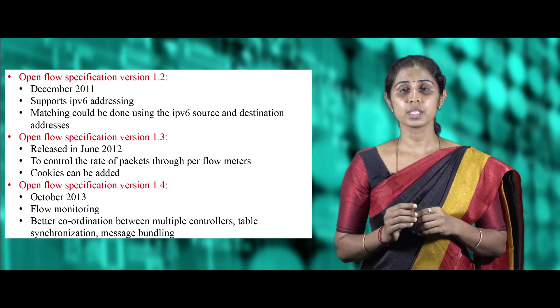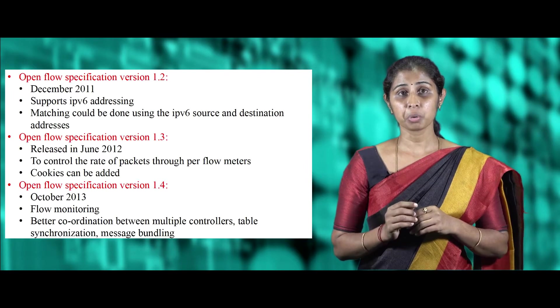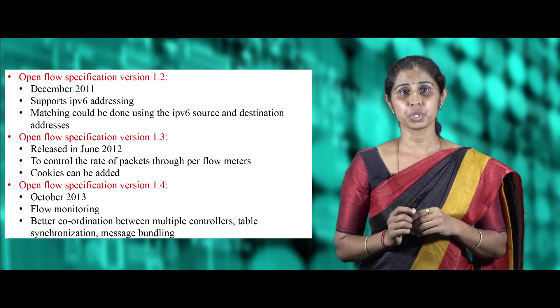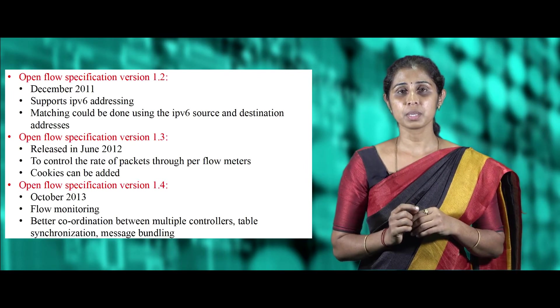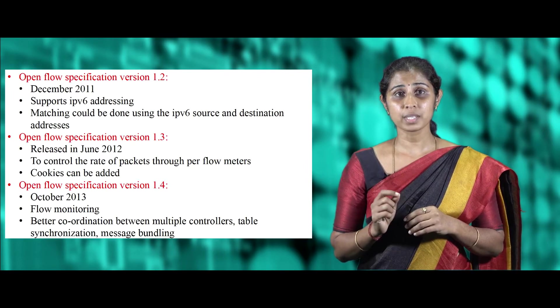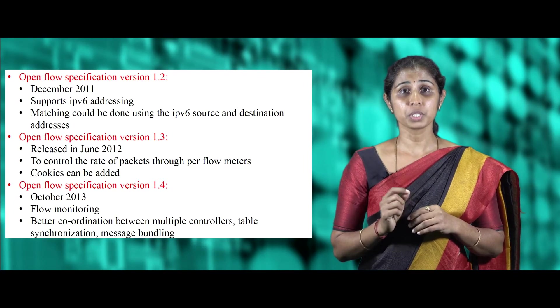OpenFlow specification version 1.2 was released in December 2011 and includes a major feature: support for IPv6 addressing, where matching can be done using IPv6 source and destination addresses.